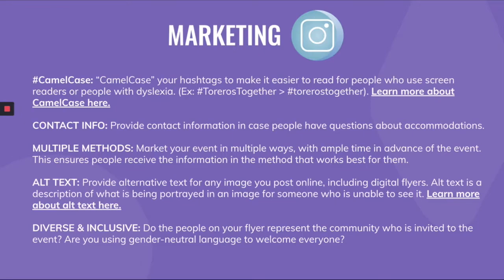Marketing is another area where accessibility is really important. One thing that might be new to a lot of people is the idea of camel casing your hashtag — using capital letters to signal the next word in a hashtag. This makes it easier for people to read if they use screen readers or have dyslexia. For example, in the hashtag #TorerosTogether, you capitalize the T in Toreros and the T in Together. We've included a link to learn more.